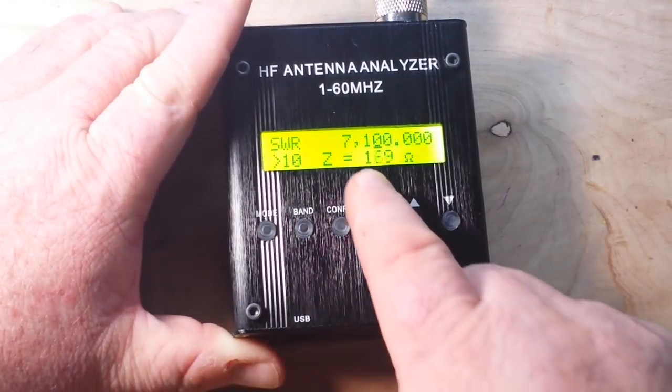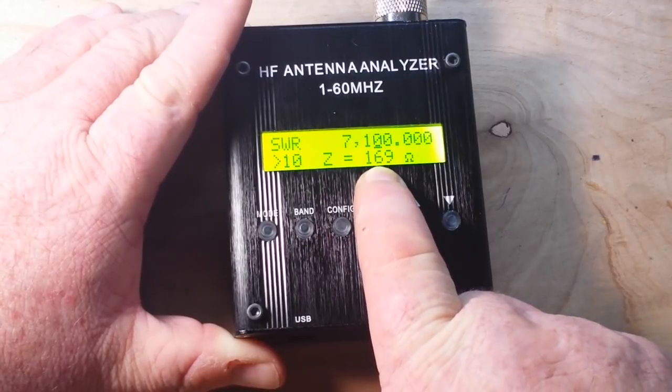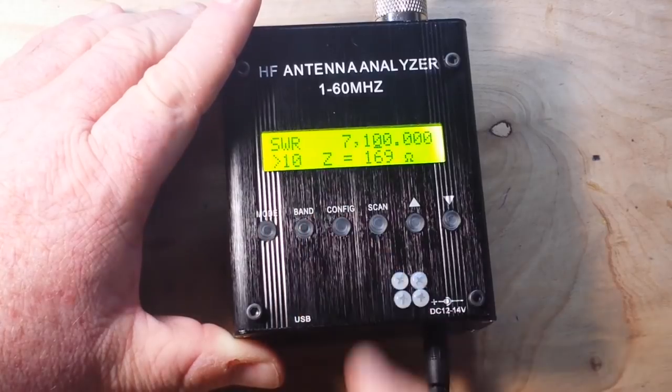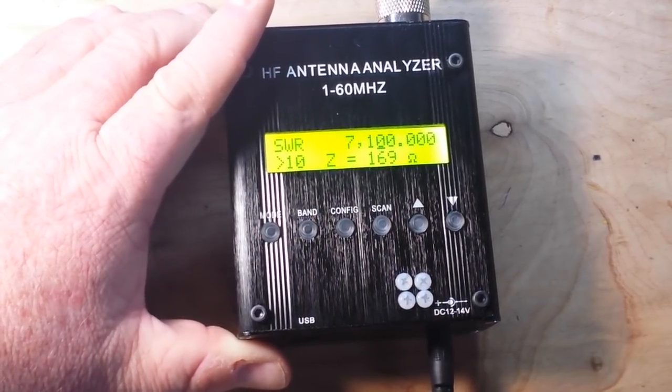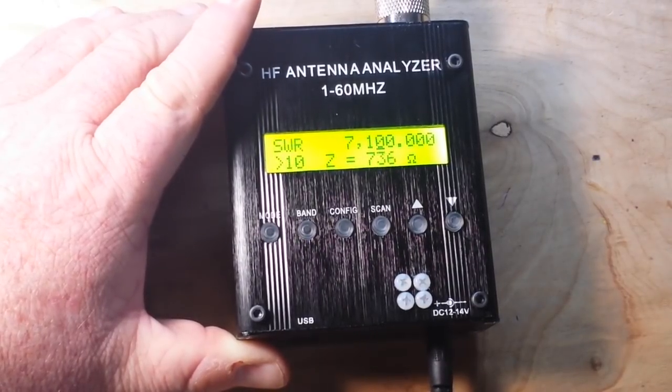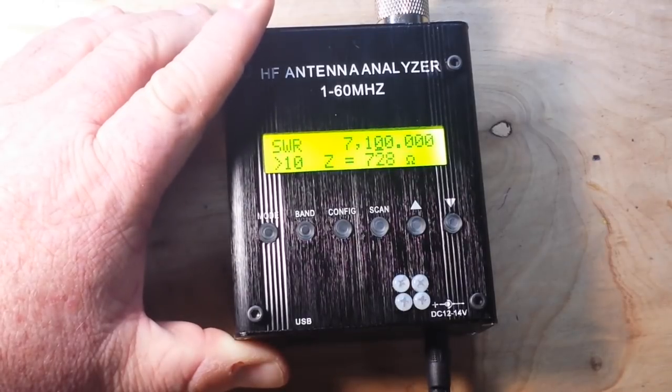And now when we look at this, we see an impedance on that antenna of 169 ohms and an SWR of 10. Let me just make sure. Okay, now we're better. I had the antenna tuner on, now the antenna tuner is in bypass. So this is the actual impedance.